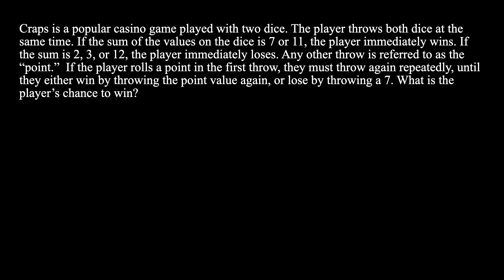To start off, I want to make a diagram to better display the information in this question. Let's analyze the first throw. If we throw a dice pair sum of 7 or 11, we immediately win the game. If our sum is 2, 3, or 12, we immediately lose the game. For any other sum value, we call this the point, and we have the chance to throw again.